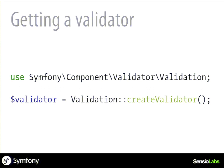To get the validator when using the component, once you have installed the dependencies with Composer, you just require the Validation class namespace from the validator component. This Validation class has a static method called createValidator that builds a new validator object. You get back this validator object and you are ready to validate data — just one line and you have a validator set up.